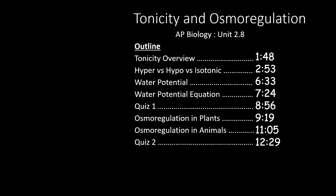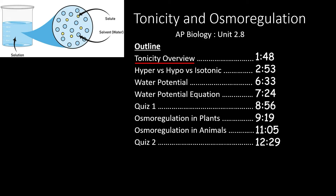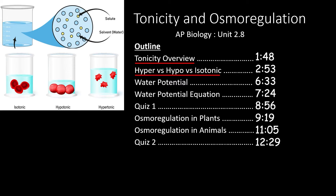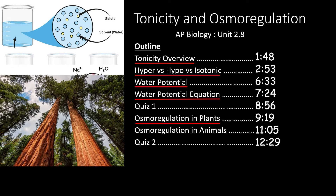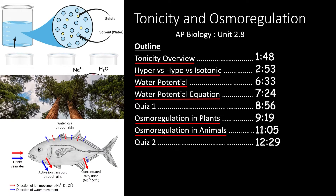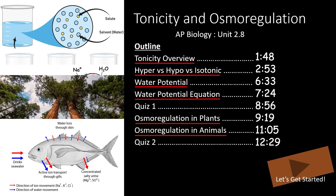We will start with a discussion of tonicity and how we can compare different solutions based on their solute concentrations using words like hypertonic, hypotonic, and isotonic. Then we'll take a look at water potential and the water potential equation we can use to predict the movement of water. After the first quiz, we'll look at how plants manipulate their cells to decrease the water potential and drive water up to their leaves. Finally, we'll look at how animals deal with different tonicities in different environments. If you only need to review one of these topics, feel free to skip forward to the times outlined here. Otherwise, let's get started.